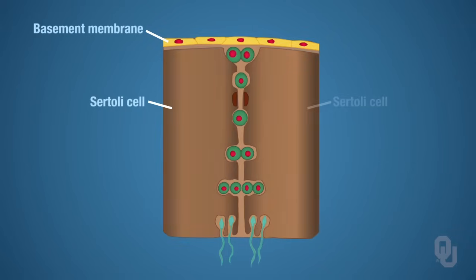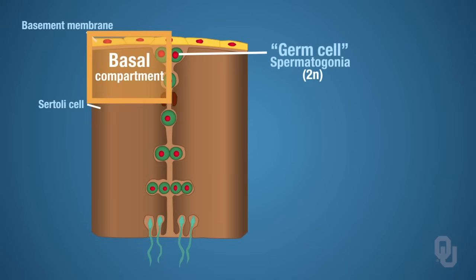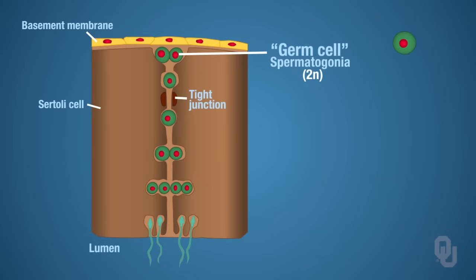We're going to start with a germ cell — the germ cells are the spermatogonia. Germ cells are diploid, 2N. Remember that you have two different compartments when it comes to these Sertoli cells: the basal compartment, which extends from the tight junction toward the basement membrane, and the luminal compartment, which extends from the tight junction to the lumen.